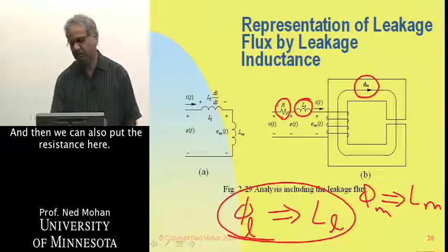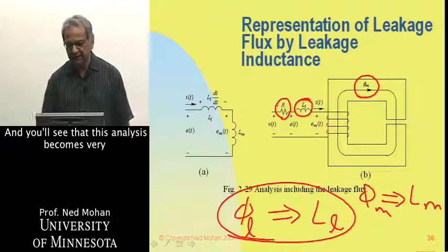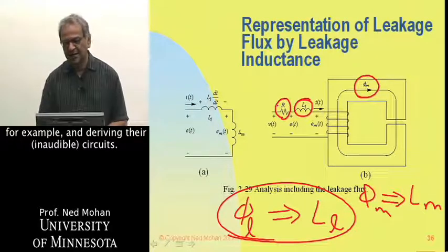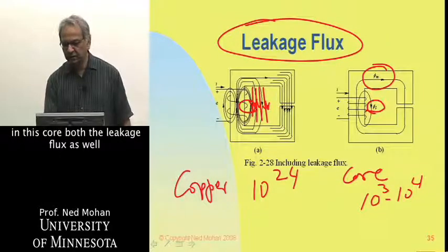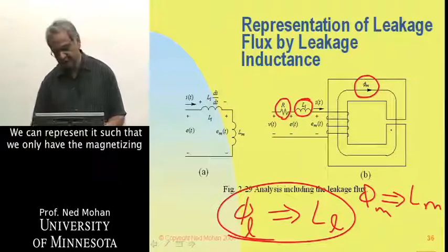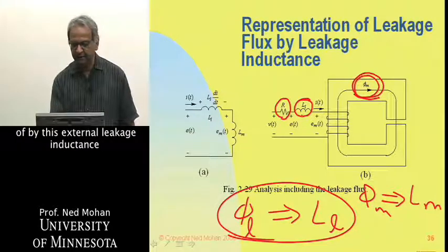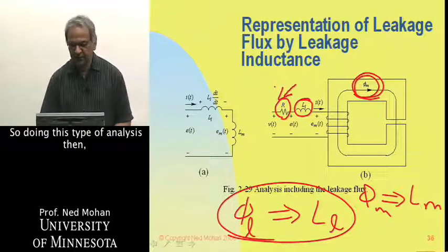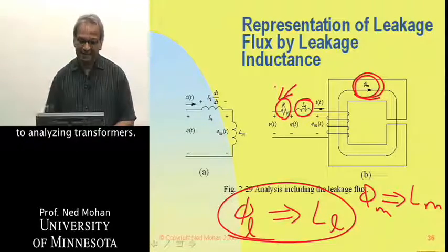We can represent the original circuit by an equivalent core where we only have the magnetizing flux — it's called magnetizing because it's all in the core and passing through the air gap as desired. The effect of leakage flux and leakage inductance is explicitly taken out, and we can also add the resistance of the coil. This analysis becomes very straightforward when applied to transformers to derive their equivalent circuit.